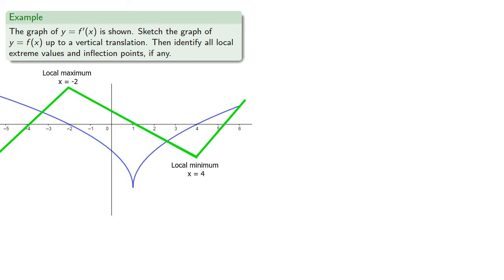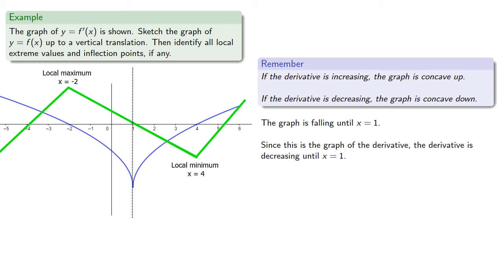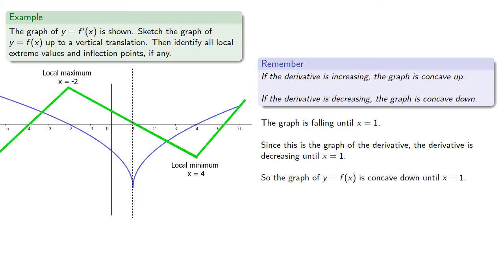How about concavity and inflection points? Remember, if the derivative is increasing, the graph is concave up, and if the derivative is decreasing, the graph is concave down. The graph of f prime is falling until x equals 1, so the derivative is decreasing until x equals 1, meaning the graph of y equals f of x is concave down until x equals 1.